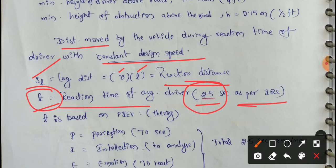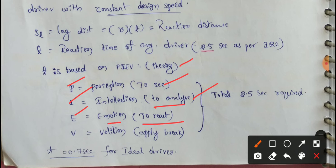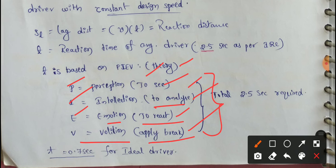The T value is based on PIEV theory. P means Perception — the driver perceives the object or obstruction (living or non-living, such as an animal or a stone). I means Identification — to analyze the situation. E means Emotion — to react. V means Volition — to apply the brake. So the complete sequence of perceiving, analyzing, reacting, and braking accounts for the 2.5 seconds reaction time as per IRC.